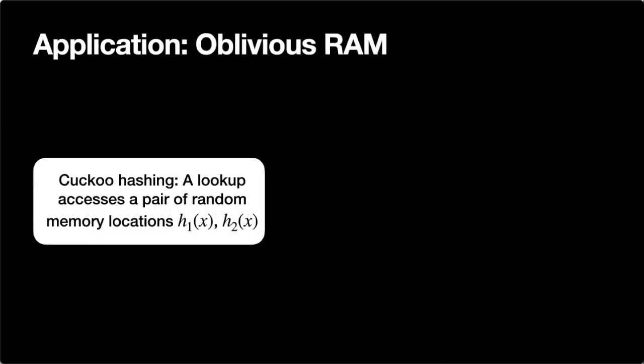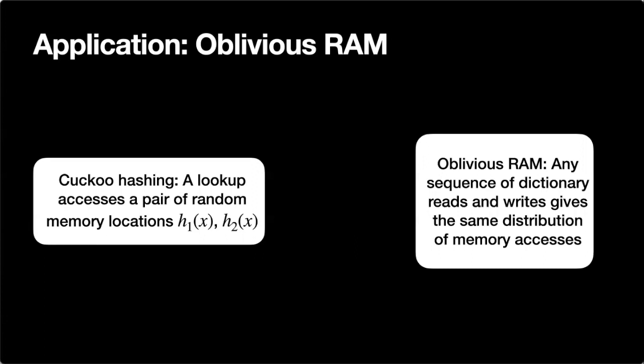Another application is oblivious RAM. Cuckoo hashing has the property that when you look up some key x, you access a random pair of memory locations — h1(x) and h2(x). In cryptography, oblivious RAM is a way to prevent someone observing memory addresses from learning anything about the information accessed. In an oblivious RAM, any sequence of dictionary reads and writes should give the same distribution of memory accesses. It turns out there are clever reductions built on top of cuckoo hashing to construct oblivious RAMs.